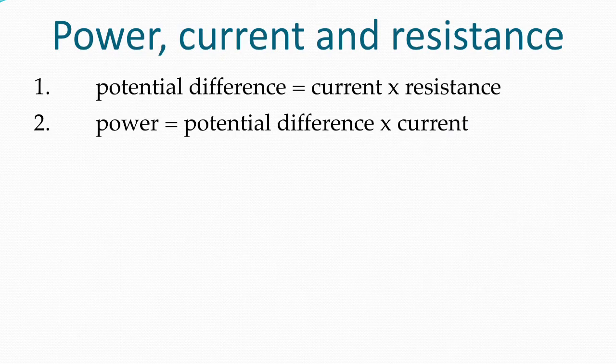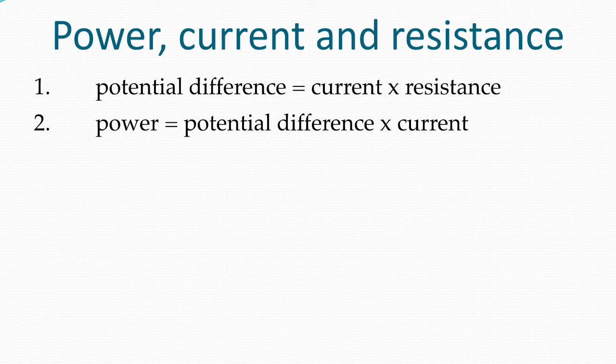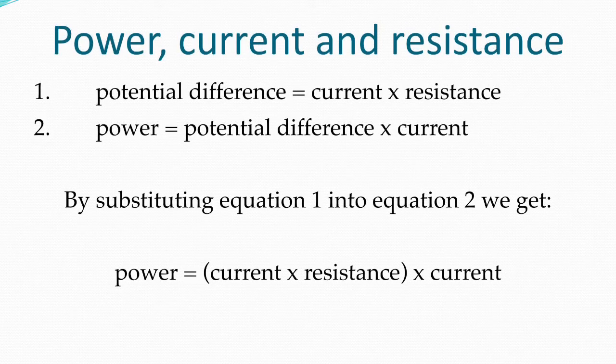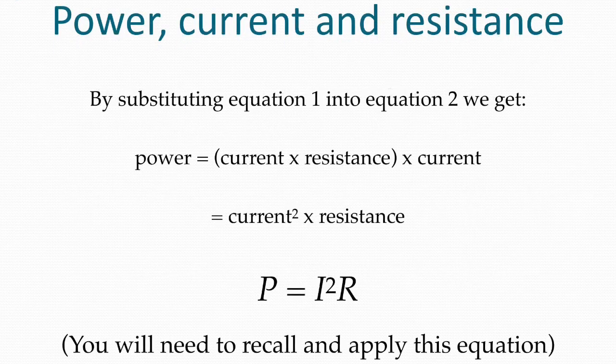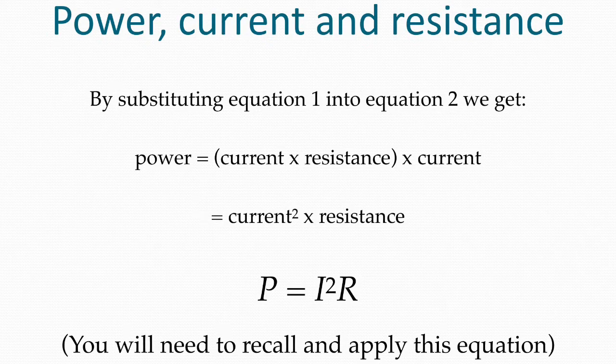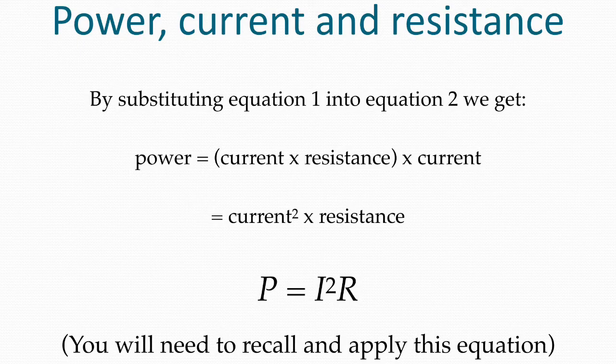At this point we have two really important equations. The first is Ohm's law, potential difference is current times resistance. And the second is power is potential difference times current. We can substitute the first equation into the second equation to get power is current times resistance times current, which is the same as current times current times resistance or current squared times resistance. This is an equation you do need to remember and apply.